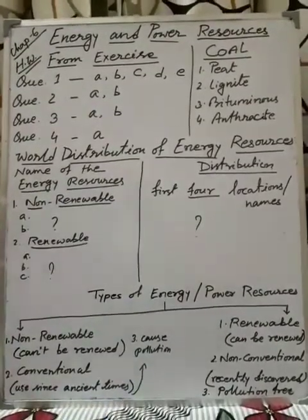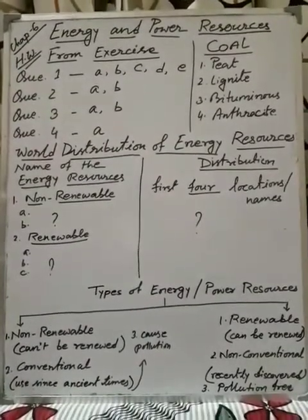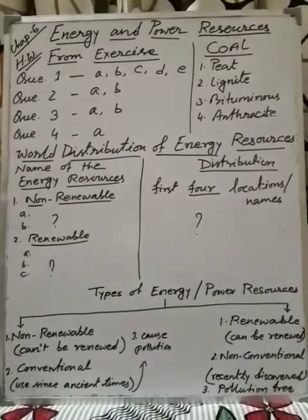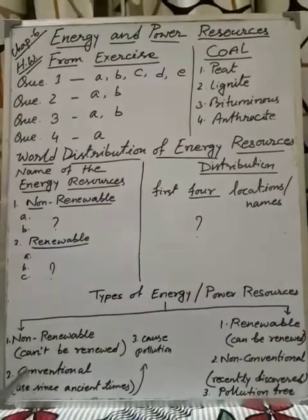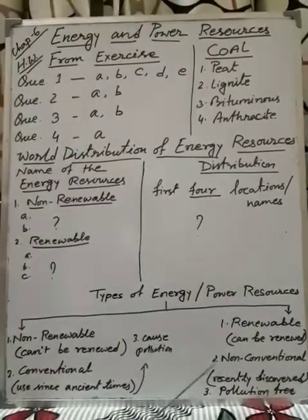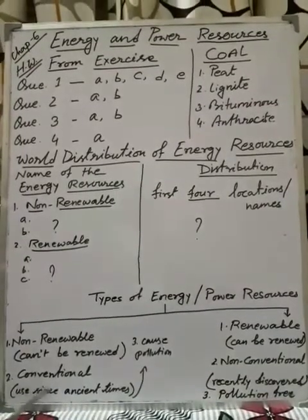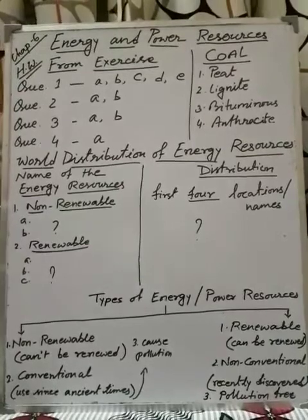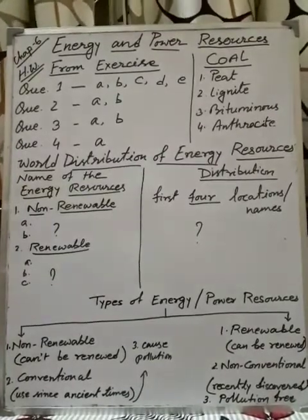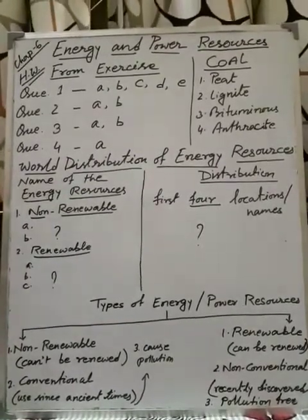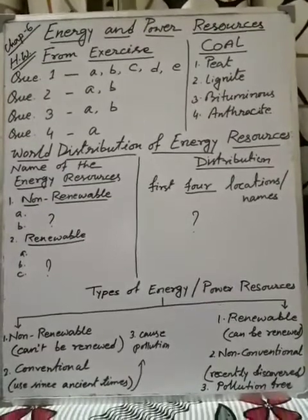Renewable means can be renewed — naturally it can be replenished, it will never finish. That is renewable. Non-renewable is called conventional and renewable is called non-conventional. Conventional means it is used traditionally — people have known about its importance and used it since ancient times. Non-conventional means it is recently discovered — their importance and uses have been recently discovered.